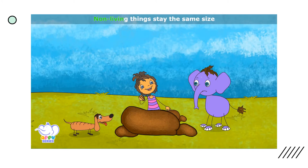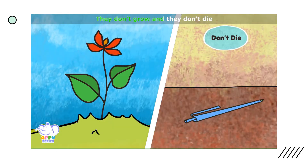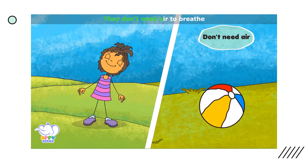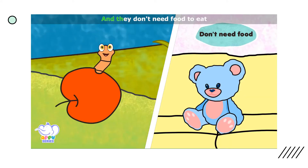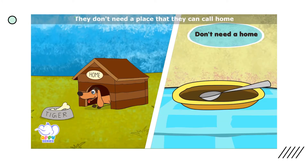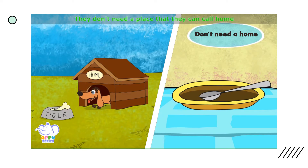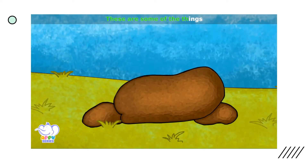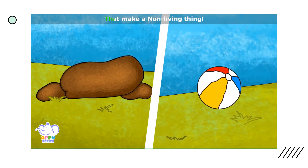Non-living things stay the same size. They don't grow and they don't die. They don't need air to breathe and they don't need food to eat. They don't reproduce beings like their own. They don't need a place that they can call home.